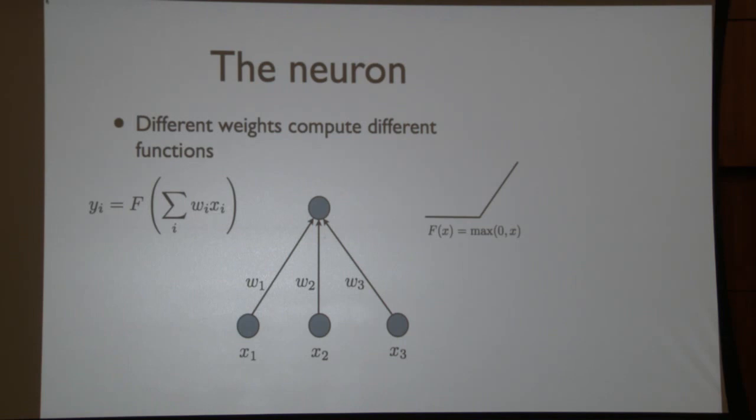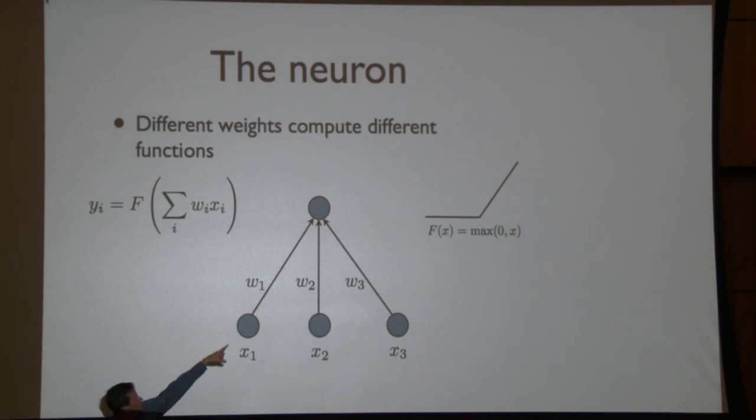The basic building block of all these models is the neuron, where you have some input values — floating point numbers — and some weights, which are the parameters of the model. You compute the weighted sum of inputs times weights, then apply some nonlinear function. Traditional neural nets in the 90s used sigmoid curves. More recently, people have found more success with the rectified linear unit, or ReLU — basically max(0, x) — which gives true zero output when the neuron is inactive, and turns out to be easier to train.